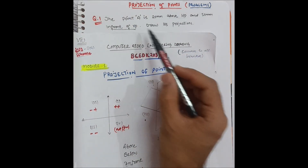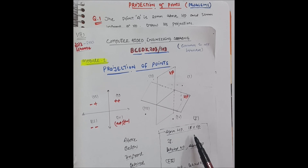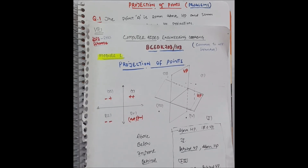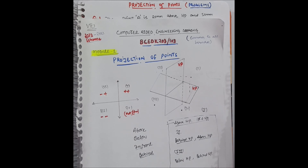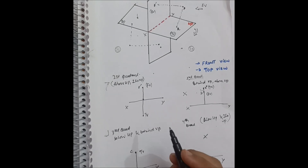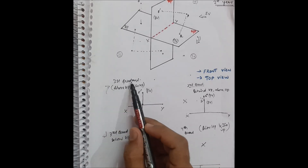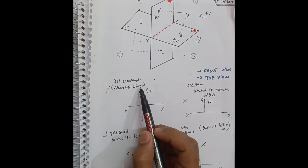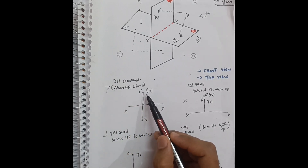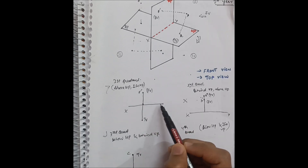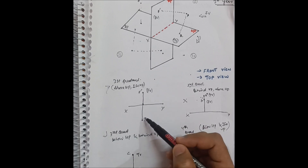Above HP and in front of VP means it lies in the first quadrant. You should also know how to draw it — where is the top view and where is the front view. I discussed this in the second video, the link is in the description box. For the first quadrant, the front view is above the reference line XY, and the top view is below the reference line XY.